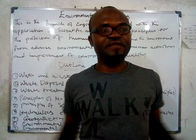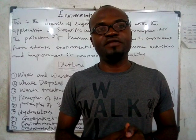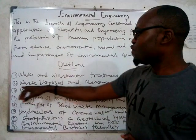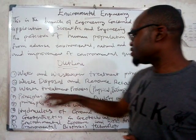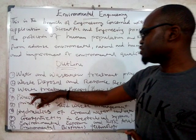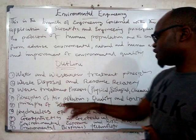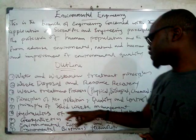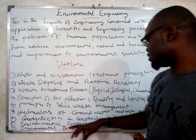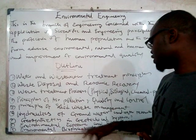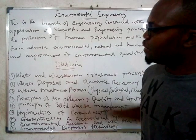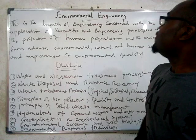In the course outline, we are going to cover: water and wastewater treatment principles, waste disposal and resource recovery, waste treatment processes, physical, biological and chemical principles for general treatment of wastewater, principles of air pollution quality and control, solid waste management, hydraulics of groundwater and water resource processes, geosynthetics and geotechnical systems, environmental exposure and risk analysis, and environmental bio-process technology.